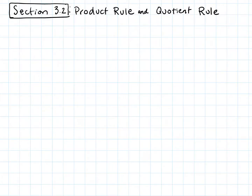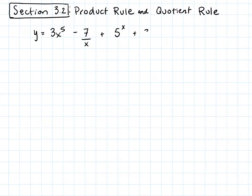For this section, we are going to discuss the product rule and the quotient rule for taking derivatives. Up to this point, we have the ability to take the derivative of something like 3x to the fifth minus 7 over x plus 5 to the x plus 3e to the x minus 11. I mixed in a few different things: some power functions, x to the fifth, 1 over x, some exponentials, and a constant.